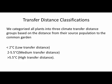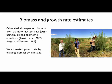To compare plants from different sites, we categorized them into three climate transfer distance groups based on the distance from their source to the garden. These transfer distances are in degrees Celsius — not kilometers — representing the difference in median maximum temperature from the source to the garden. The groups are low, medium, and high transfer distance, and we'll discuss those in detail.